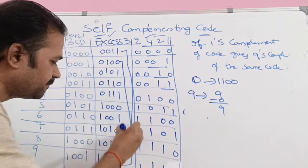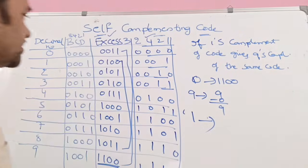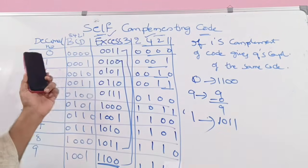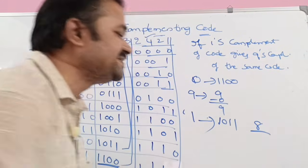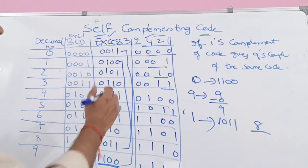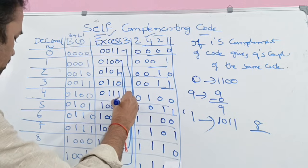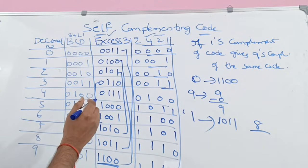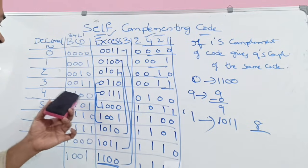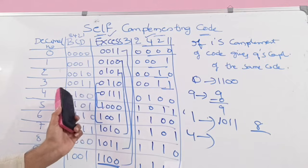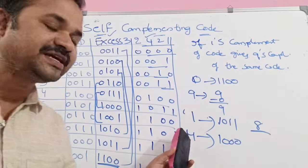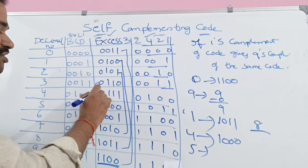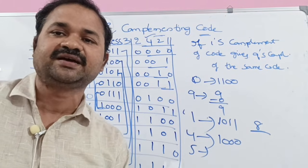Likewise, for decimal 1: the XS3 code is 0100. The 1s complement of 0100 is 1011. The 9s complement of 1 is 8, and the XS3 code for 8 is 1011 — both are the same. For 2 and 7, these two are also the same. For 3 and 6, these two are the same. For 4 and 5: the XS3 code for 4 is 0111, and its 1s complement is 1000. The 9s complement of 4 is 5, and the XS3 code for 5 is 1000. Both are the same, which is why XS3 is a self-complementing code.